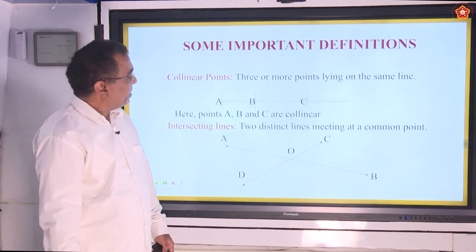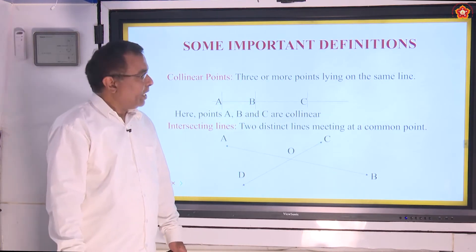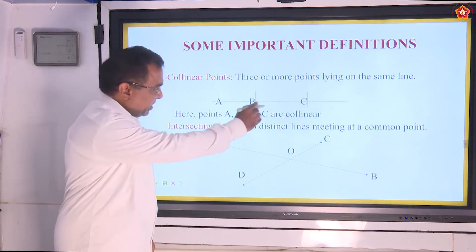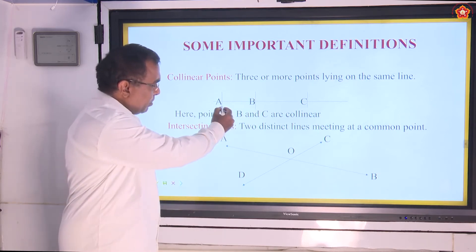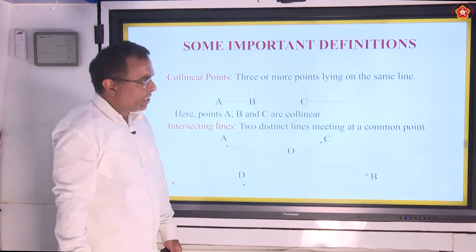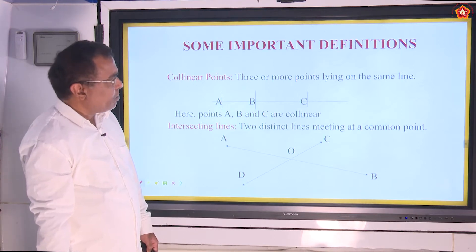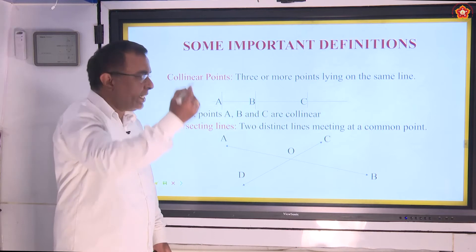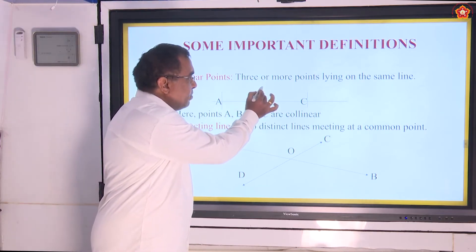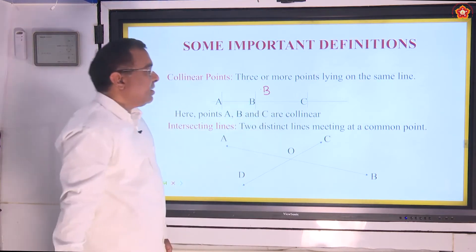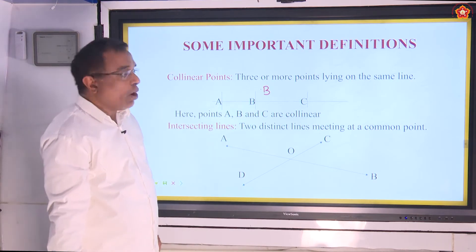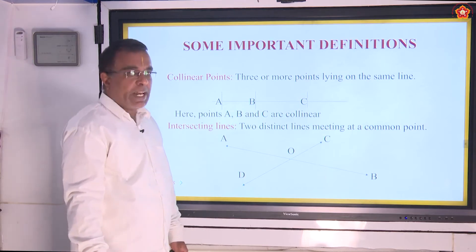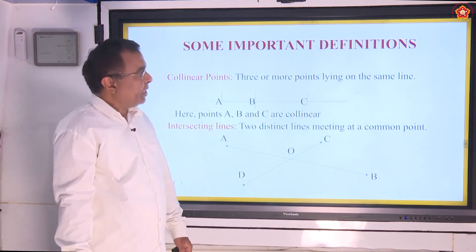Some more definitions. Collinear points: when three or more points are lying on the same line — look at the points A, B and C, they are lying on the same line — then we call them as collinear points. Suppose they are not lying on the same line, they are said to be non-collinear. But here, all the three points are lying on the same line, so it is known as collinear points.